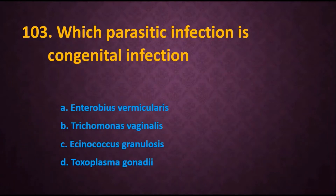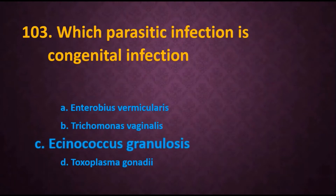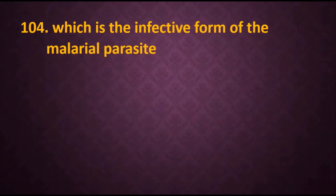The answer is Echinococcus granulosus, also called the dog tapeworm or hydatid worm, which is involved in causing cystic echinococcosis, and it is a congenital infection. Question 104: Which is the infective form of the malarial parasite? Options are: A) ookinete, B) sporozoite, C) bradyzoite, D) tachyzoite.